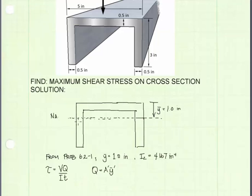So the area, A-prime, will be the area above or below. Clearly it's going to be easier to find the area below the neutral axis. So A-prime is shown by the hatched area. It's going to be two of those legs.